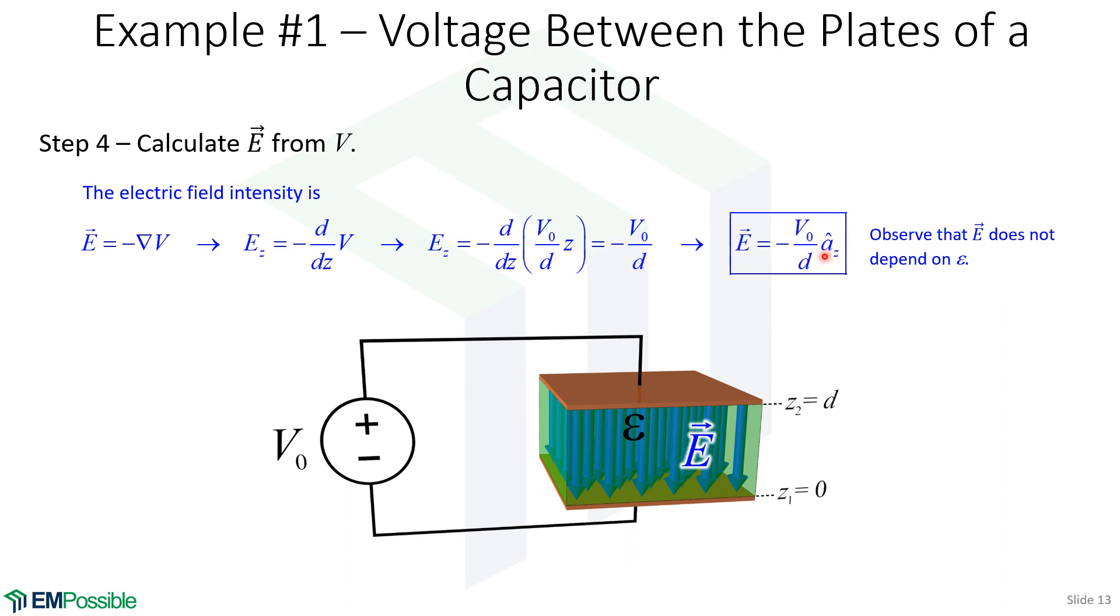Notice there's a minus sign here. And that's because the electric fields are pointing downwards. And it's consistent with our sign convention where the electric field points from high potential to low potential. Also notice that this expression for the electric field intensity does not depend at all on the permittivity. That's an interesting conclusion.